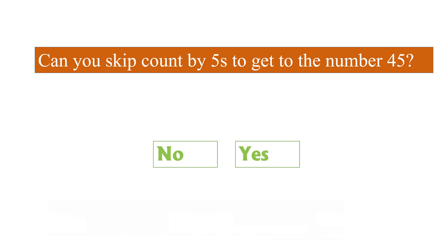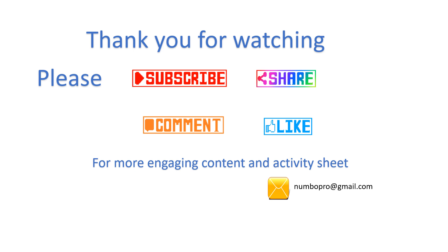We have to skip count by 5 to get to the number 45. Applying the multiplication table trick: 5×9=45, so yes, we can reach 45 by skip counting by 5. To know more about numbers, please subscribe, share, like and comment — you can also write to us.